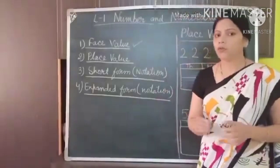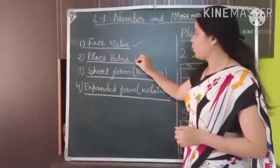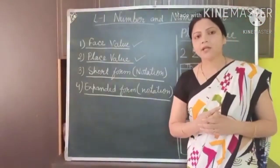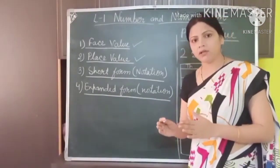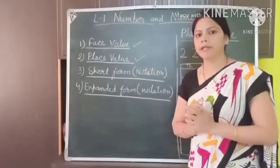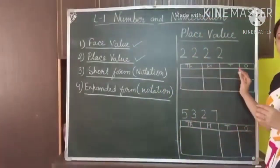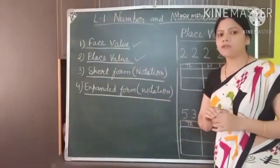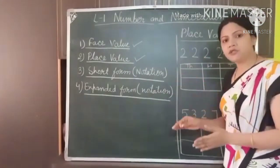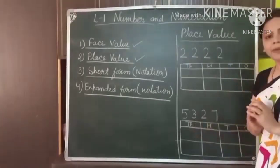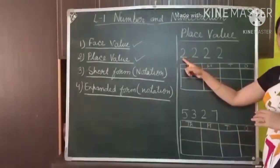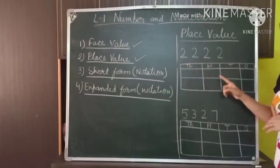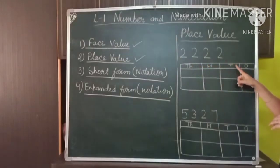Now we will find out about place value. Here I have written the same numbers again. A place value of a number is the position at which it is placed. I have drawn here two tables. To know the place value of a number, first we have to know at which place that number is placed. For the number 2,222, I have drawn the place columns: thousands, hundreds, tens, and ones.